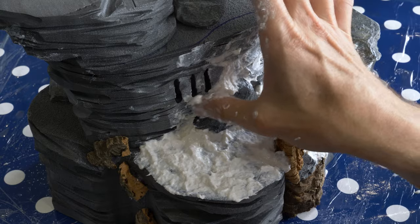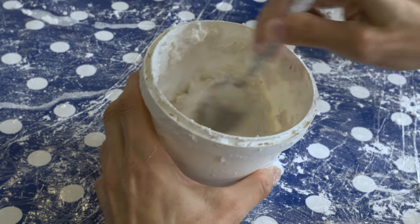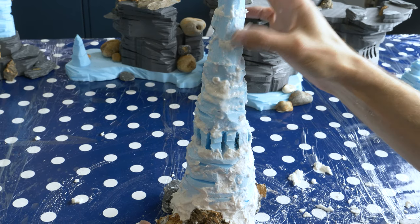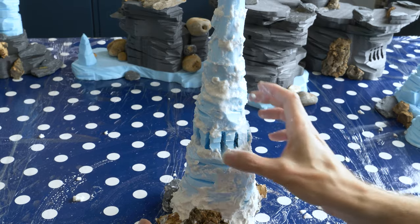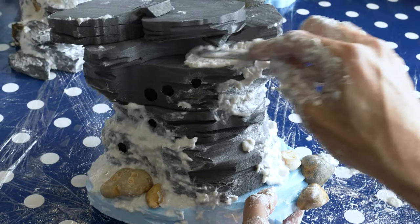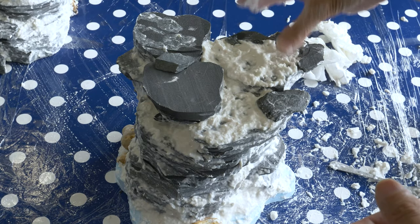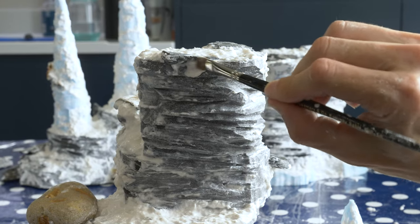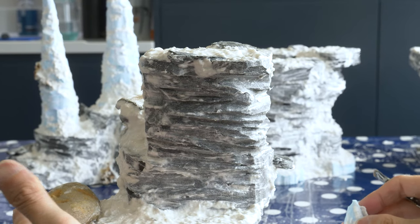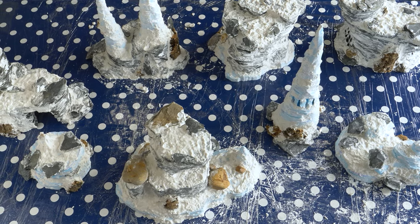If whilst you're working you find the Sculptimold begins to dry in the pot, we can simply mix in some additional water.